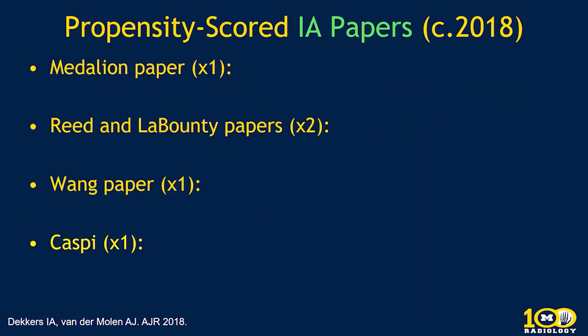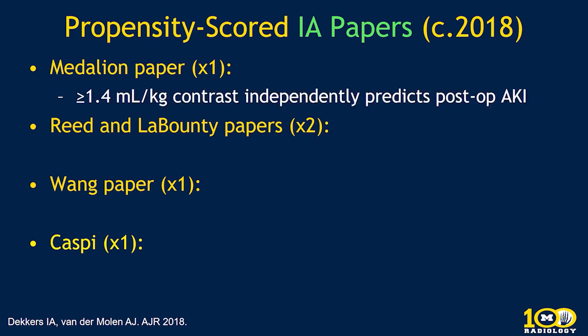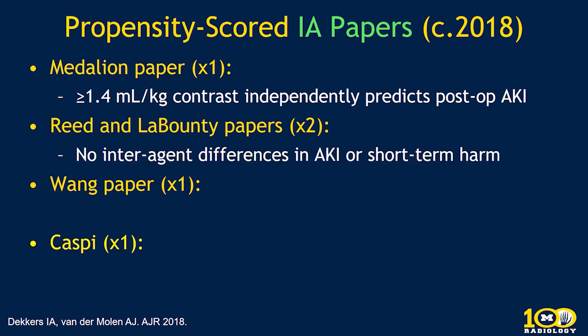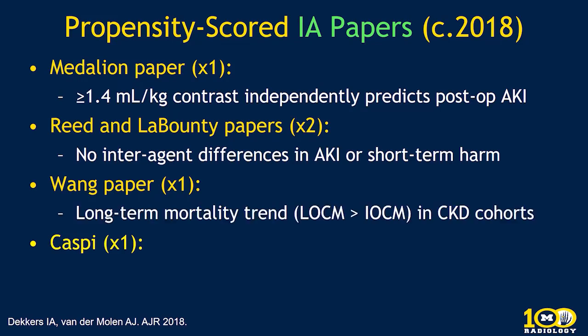Papers using propensity score adjustment for intra-arterial administration found that contrast independently predicts post-operative acute kidney injury. One group found no inter-agent differences in AKI or short-term harm. Another paper found long-term mortality trends comparing low-osmolality versus iso-osmolality contrast material in chronic kidney disease cohorts, and one study found that contrast was not associated with acute kidney injury.